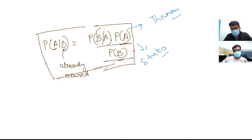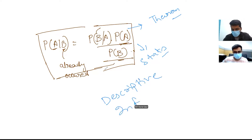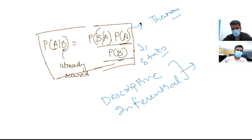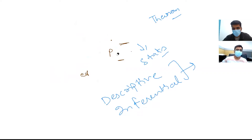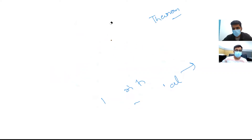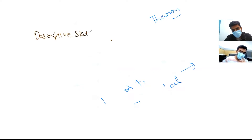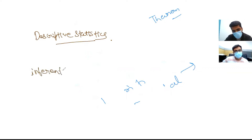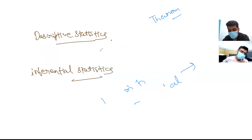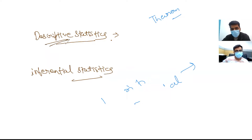Interviewer: I just want to know the difference between descriptive and inferential statistics. Candidate: Sure, let me explain. Descriptive statistics — as its name suggests — focuses on describing the characteristics or features of a dataset. It gives a description and highlights all the features of our dataset.